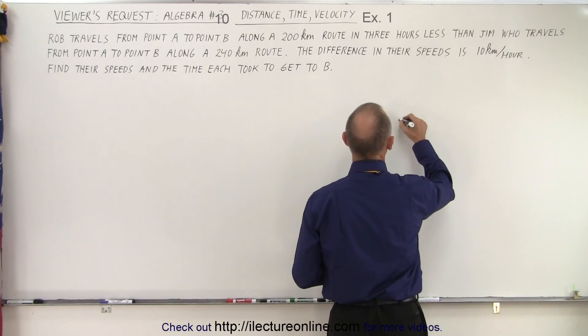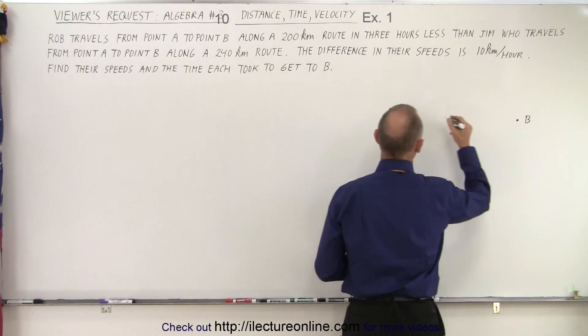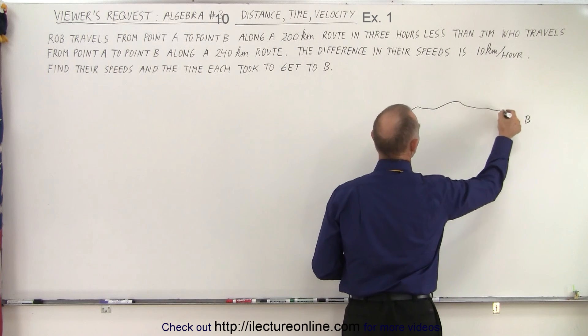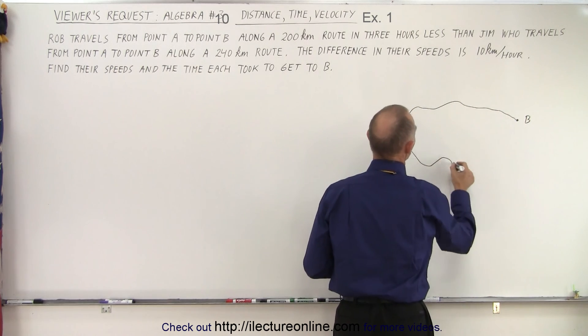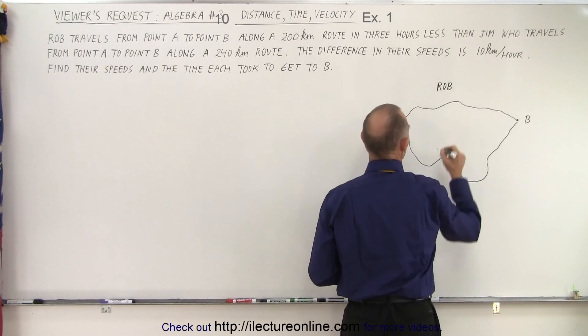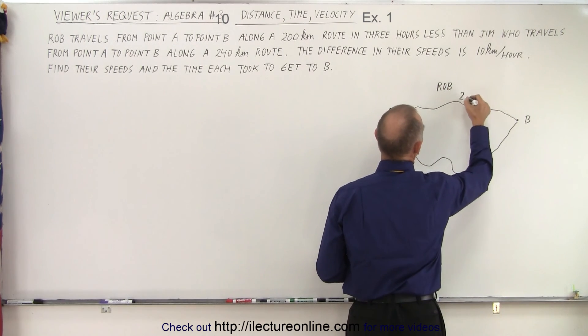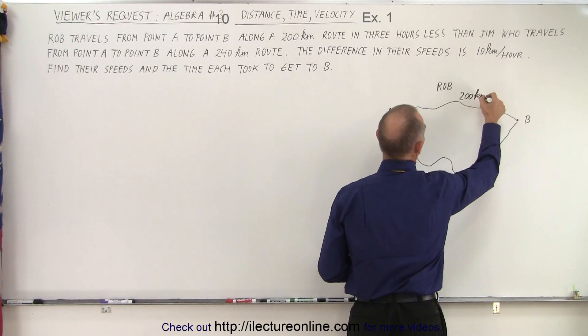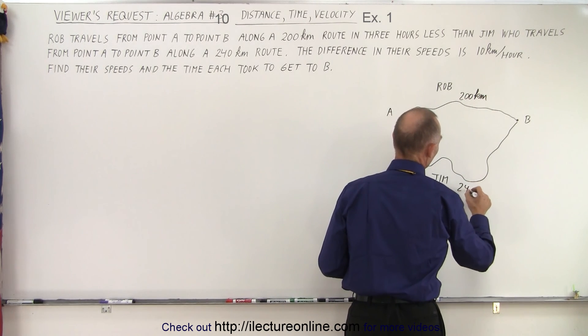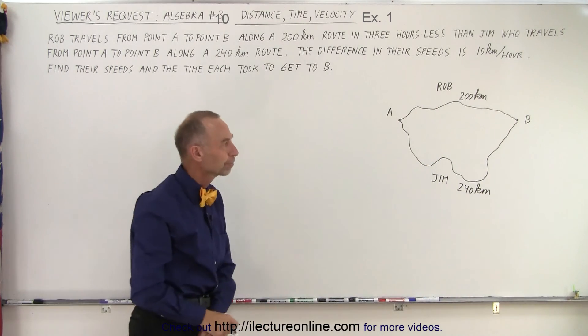So here we have point A and we have point B and we have a shorter route and a longer route. And so Rob took the shorter route. Jim took the longer route. The shorter route is 200 kilometers and the longer route is 240 kilometers.